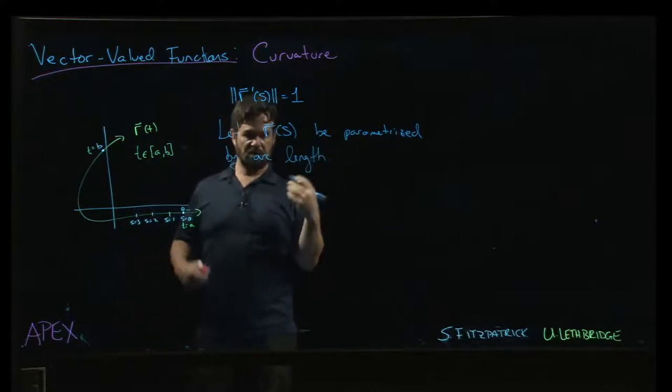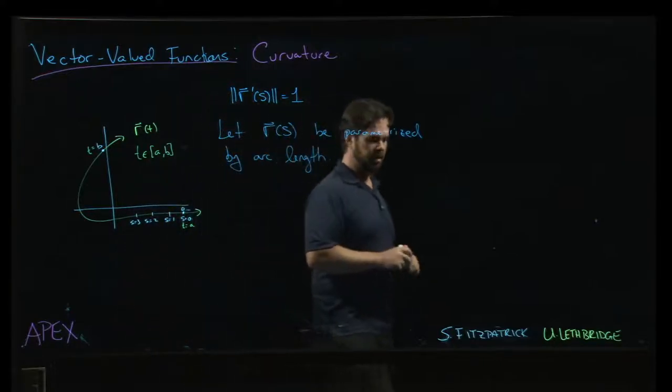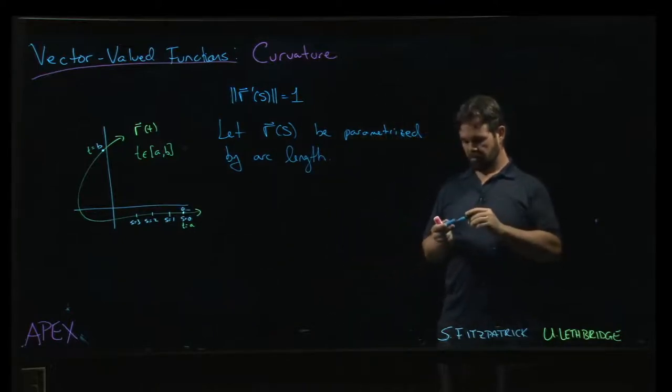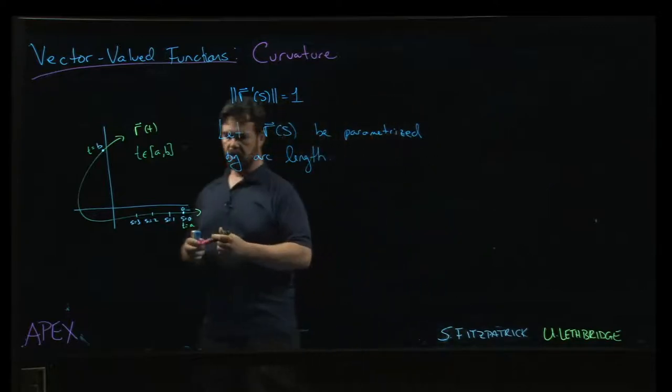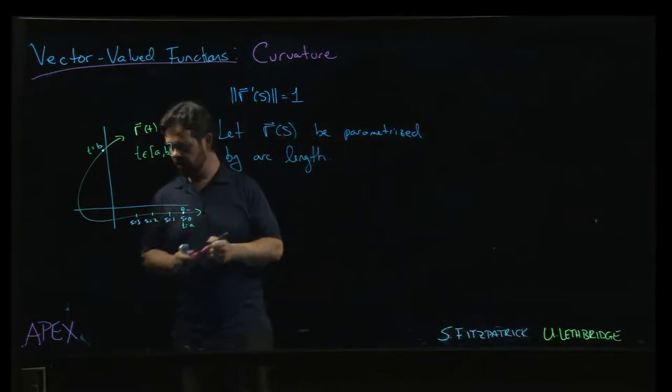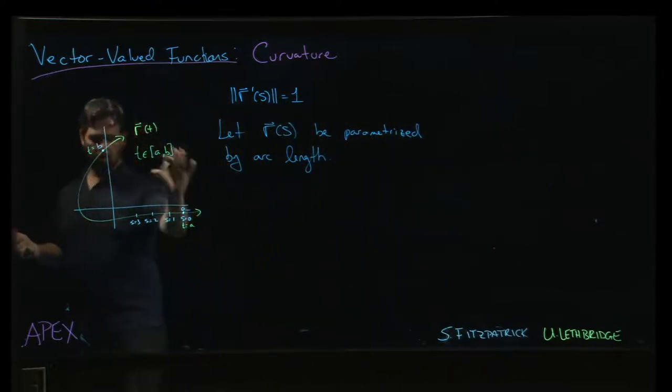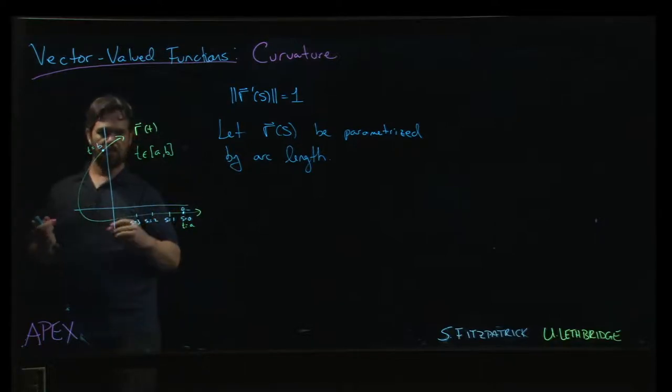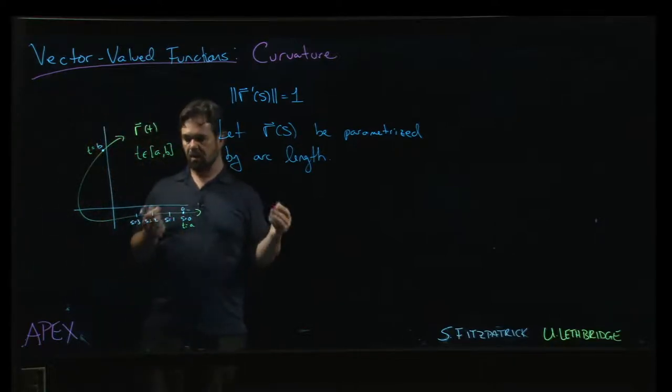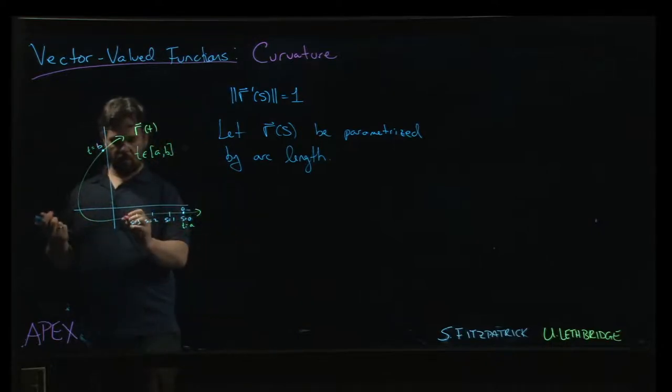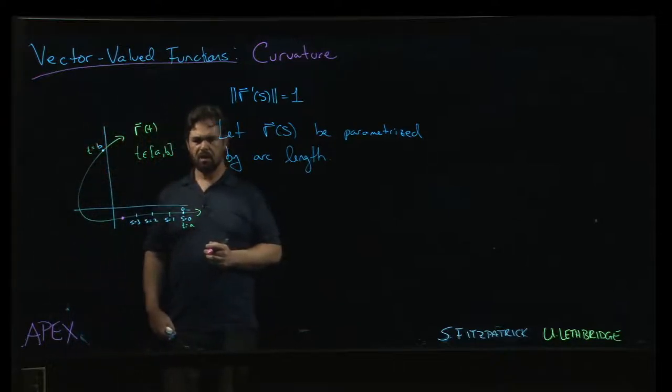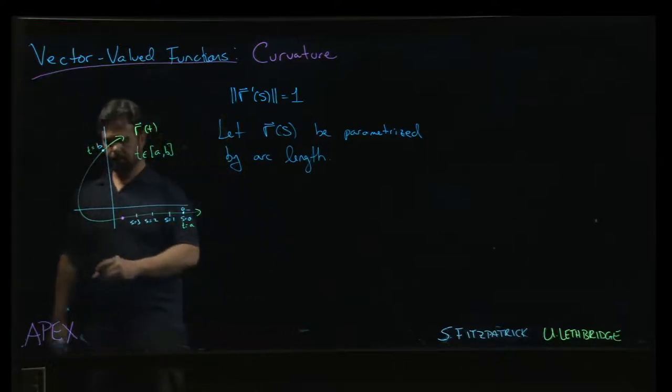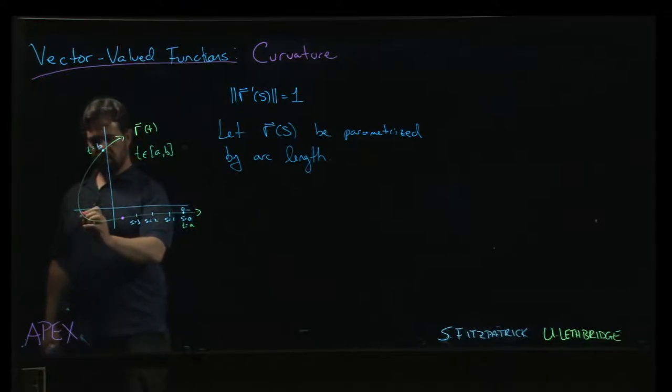With that we can define the curvature. The idea with curvature is, if you think about a graph, curvature should be some measure of how much your curve deviates from being straight. If I'm at a point here, it's not very curvy at all, whereas if I'm here, it's bending quite a bit. I would expect to see more curvature here than there.